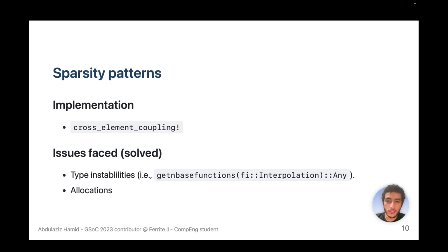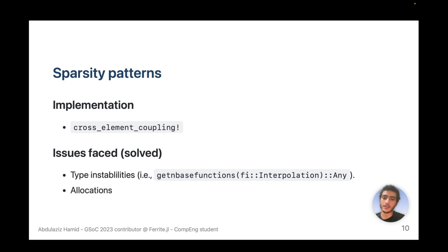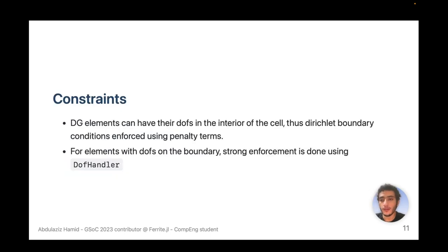The implementation is mainly the cross-element coupling function, which is used internally. The user-facing part is just the keyword arguments. Issues faced were mainly type instabilities and allocations: type instabilities were due to issues with interpolations, and some functions that were allocating didn't have non-allocating versions, so we created and used them.